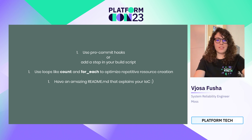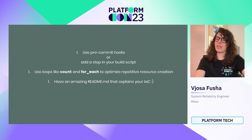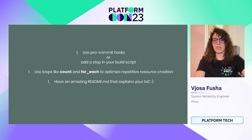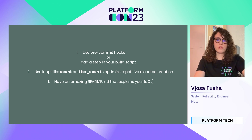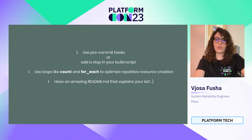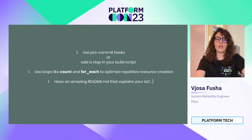Let's continue with a few tips I find really useful. First, use pre-commit hooks or add a step in your build script for formatting your Terraform code. This makes it easy to not worry about whether Terraform formatting is correct. Even before committing your code or in your pipeline, adding a step that runs Terraform format and pushes a commit to your source code is very useful. Also, use loops like count or for_each to optimize repetitive resource creation — for example, creating multiple service accounts or subnets within just one block of resource code. You can find a lot of examples out there for this.